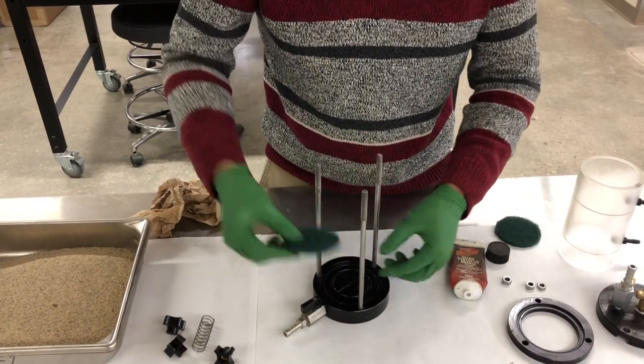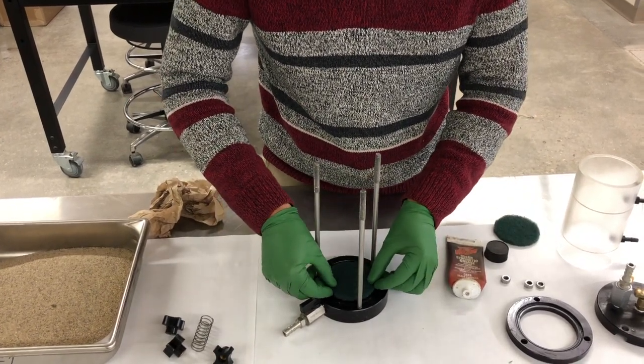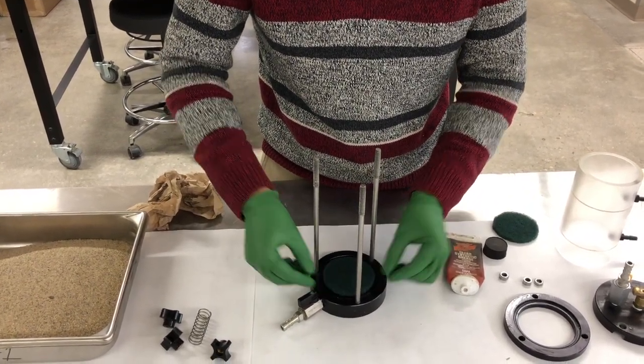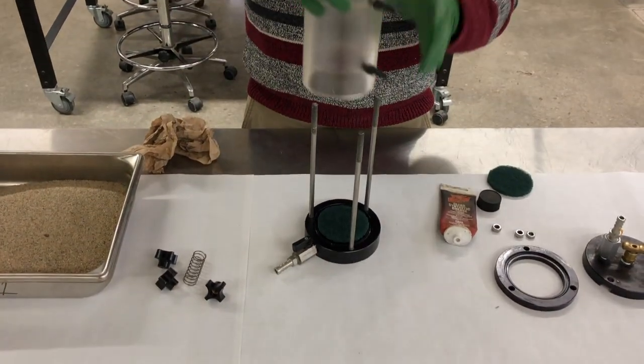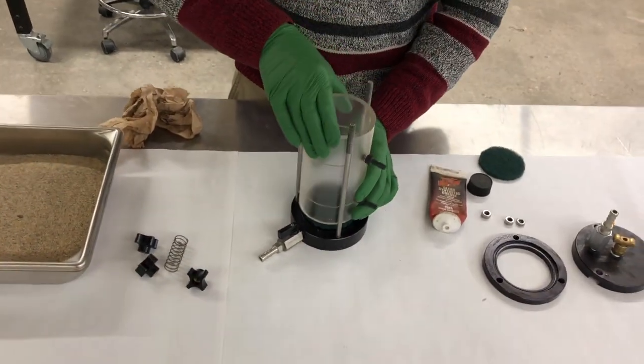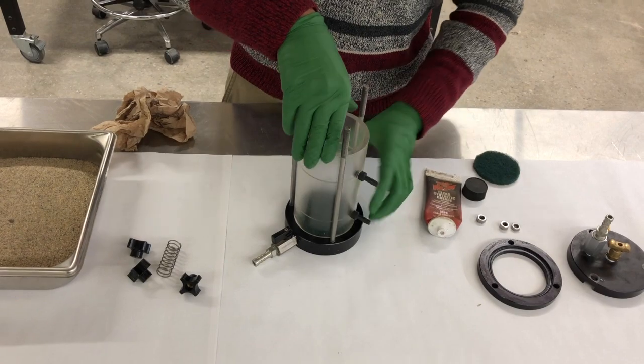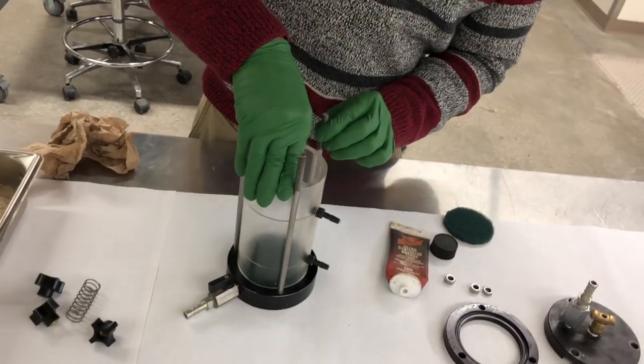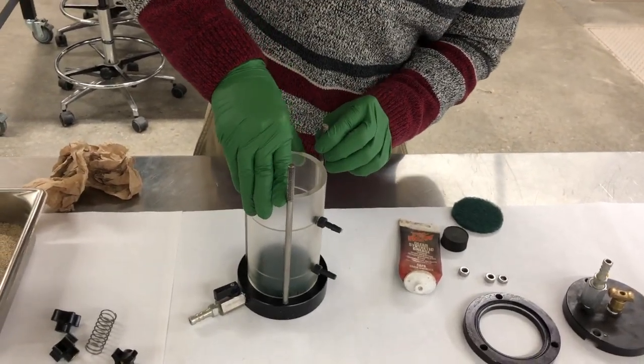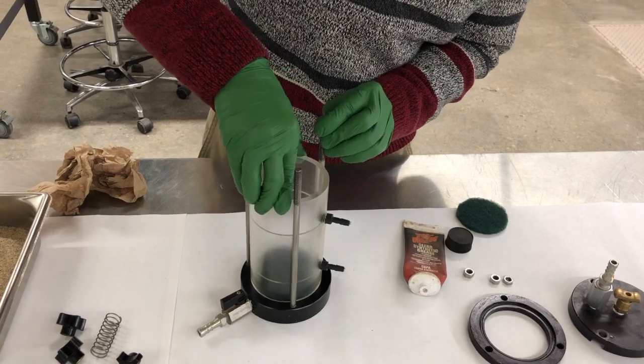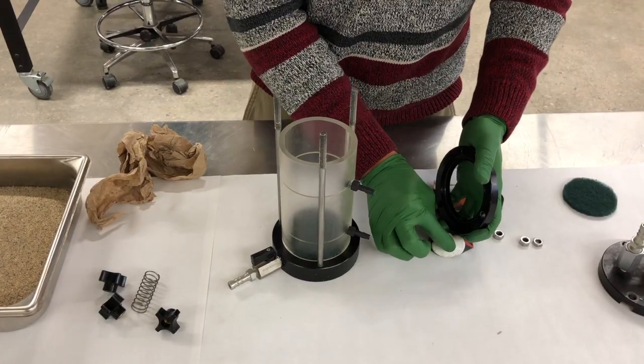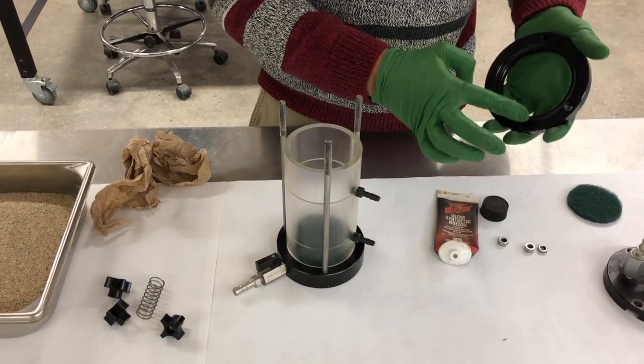To begin assembling the permeability cell, place the porous material on the bottom plate. Create a seal between these two components. Apply grease to the top plate of the permeability cell.